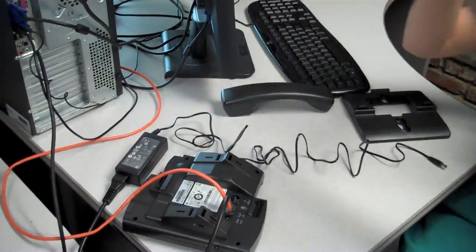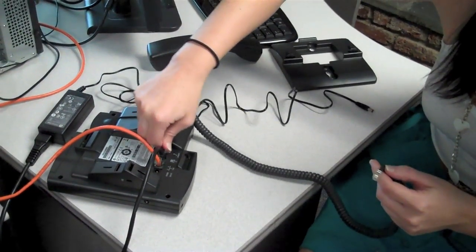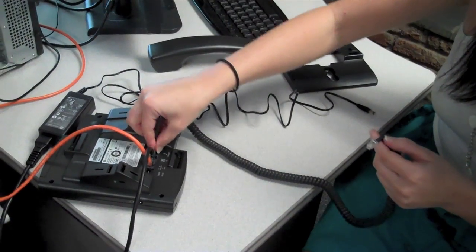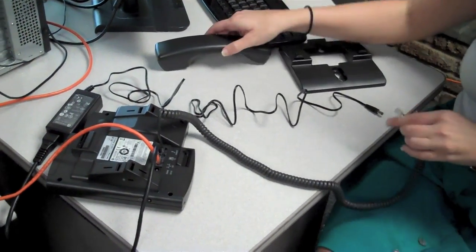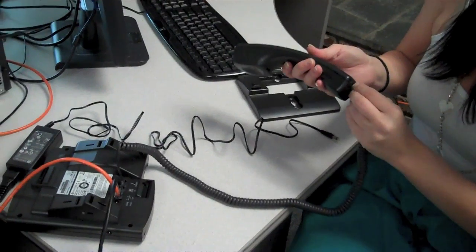Once that is done, you'll take the handset cable, and taking the long end that is flat, plug it into the handset connector of the telephone itself. Then you'll plug the smaller, shorter end into the handset itself.